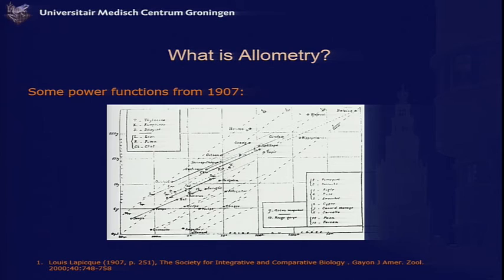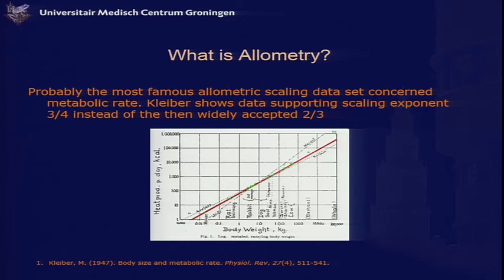You can see graphs from very old publications from 1907 where you can recognize these power functions. Probably the most famous allometric scaling dataset came from Max Kleiber in 1947. He showed data supporting an allometric scaling exponent of three-quarters for metabolic rate, instead of the at that time very widely accepted two-thirds scaling exponent.